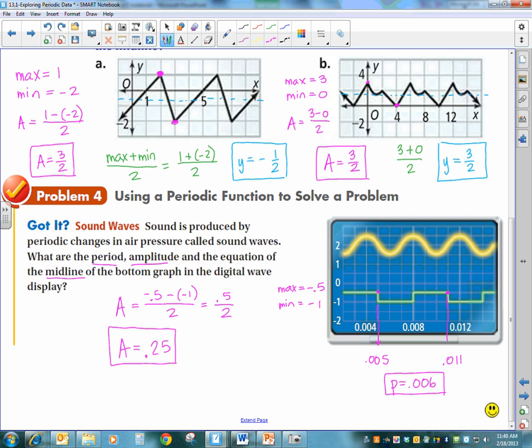And the equation of my line, my midline is max plus min over 2 and when I simplify that that gives me, what is that, that's negative 1.5 over 2 so my midline is y equals negative 0.75.